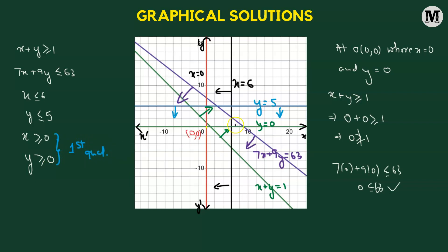Now we find the region common to all the inequalities. The region common to all inequalities is marked in red and represents the solution set. We can label the boundary vertices of this region as points A, B, C, D, E, and F. Any point picked from this region will satisfy all of the given inequalities.